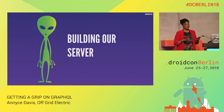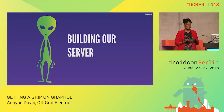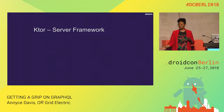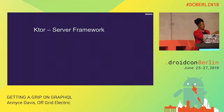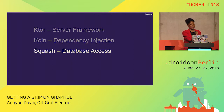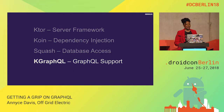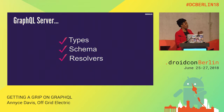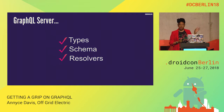Let's look at what went into building our UFO sightings GraphQL server. Being a Kotlin fan, I built it all in Kotlin. The stack includes Ktor as the server framework, Koin for dependency injection, Squash for database access, and the star of the show — kGraphQL — for our GraphQL support. A GraphQL server consists of three things: types, schema, and resolvers. We're going to look at them one by one.